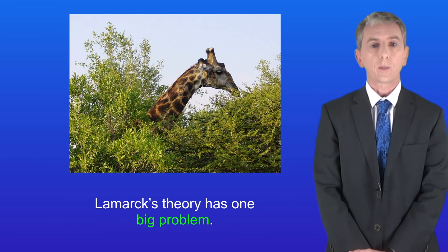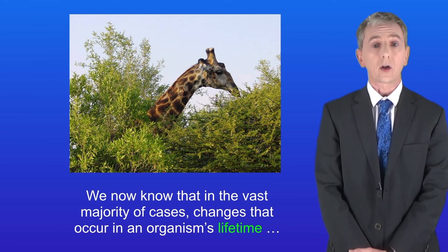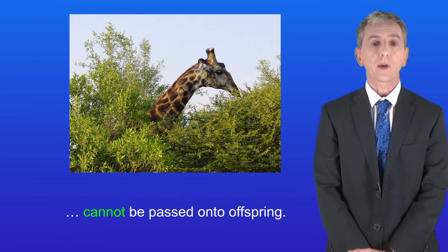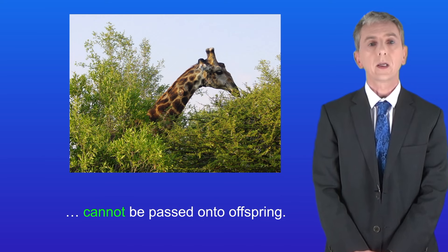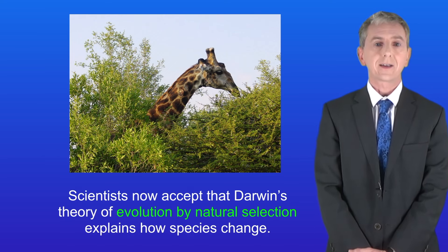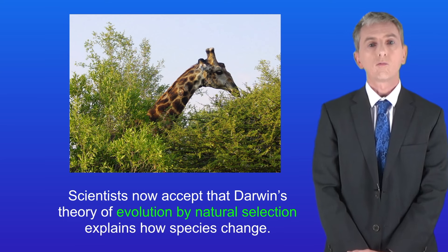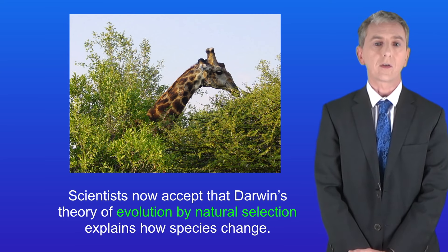Lamarck's theory has one big problem. We now know that in the vast majority of cases, changes that occur in an organism's lifetime cannot be passed on to offspring. So Lamarck's theory was incorrect, and scientists now accept that Darwin's theory of evolution by natural selection explains how species change. You'll find plenty of questions on the theory of evolution in my InVision workbook, which you can get by clicking on the link above.